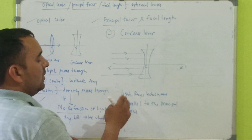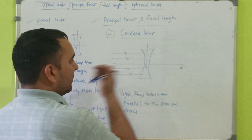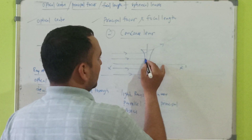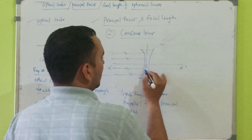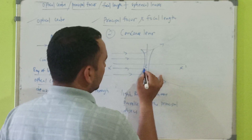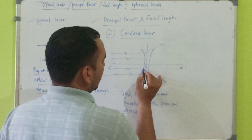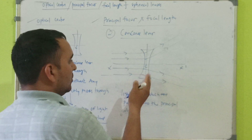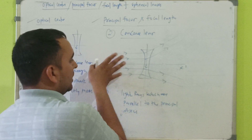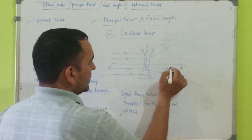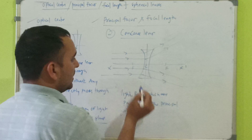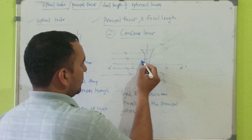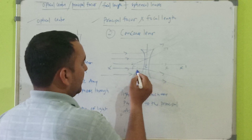These light rays, which are parallel to the principal axis, also get refracted — they get bent — in such a way that they show divergence. Two focal points exist here as well: when light rays come from the left side, and when they come from the right side. If we extend these light rays after refraction, they appear to meet at a point imaginarily.